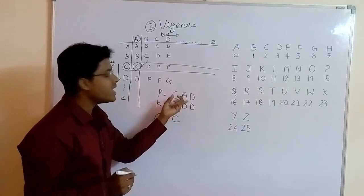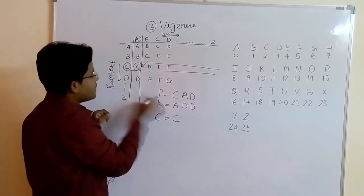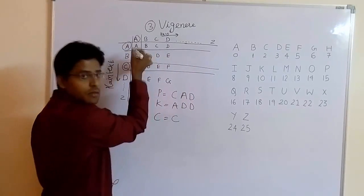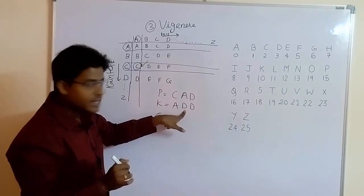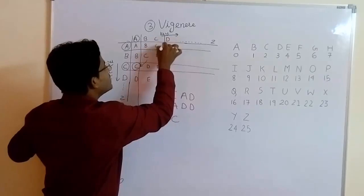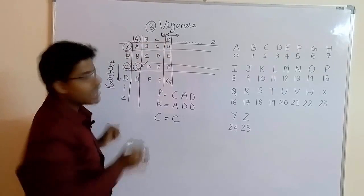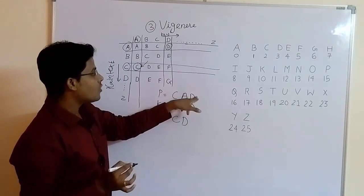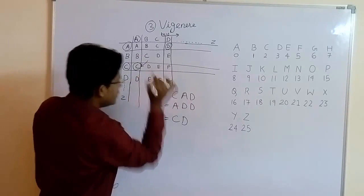Now the cipher text for A: as I told you before, you have to see A here. Using plain text we fix the row — A is in first row. So answer will be either A, B, C, or D. Now to fix the column we are seeing the key, that is D. See where D is here: A, B, C, D — here it is D. So we are fixing the column. The answer is where your row and column intersect. That is D. So answer is D. Similarly for plain text D with key D: fix D row and D column — that gives G.